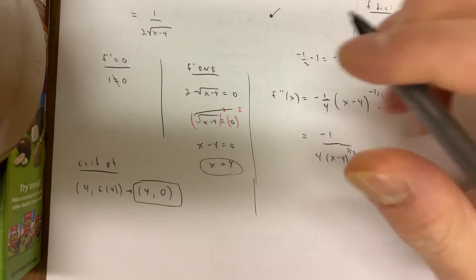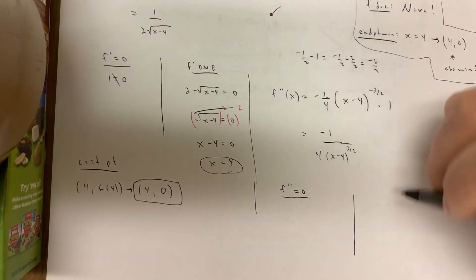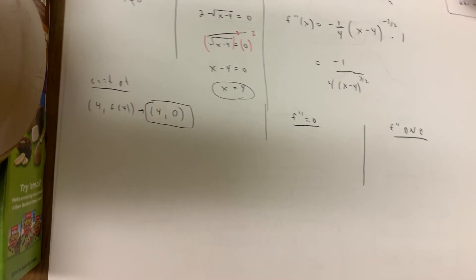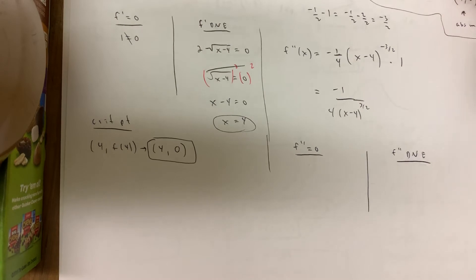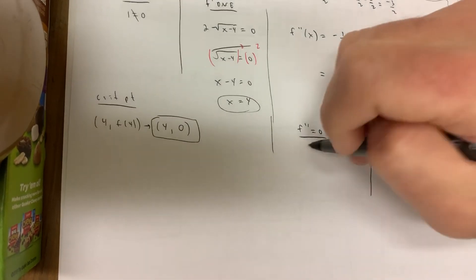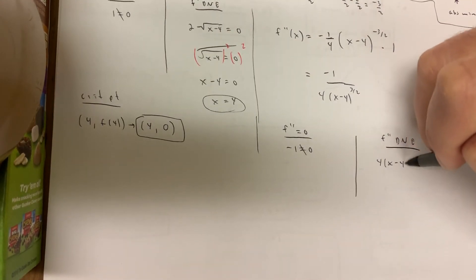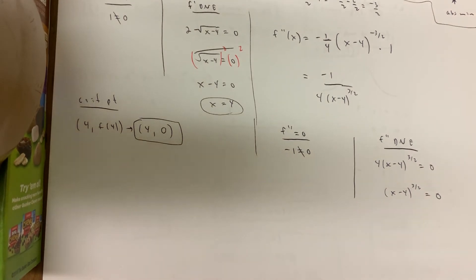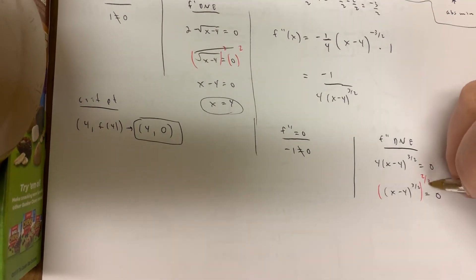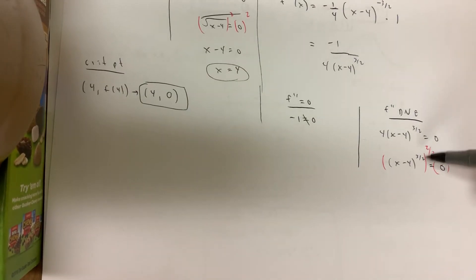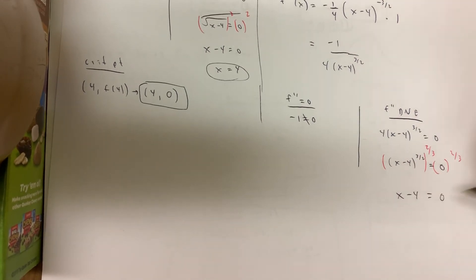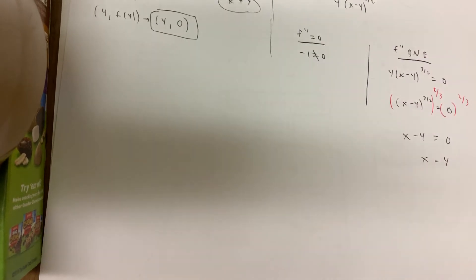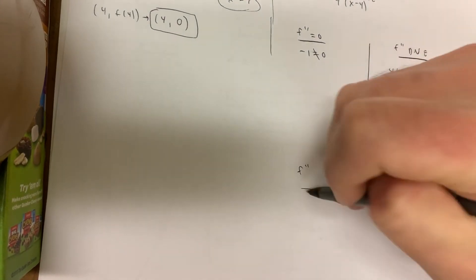Another fractional derivative — figure out where f double prime equals zero or is non-existent, for possible inflection point x-values. A fraction equals zero when the numerator equals zero — not happening with −1. A fraction is undefined when the denominator equals zero — that occurs at x = 4. So the only possible inflection point x-value is x = 4.